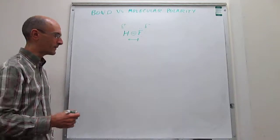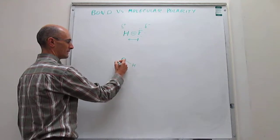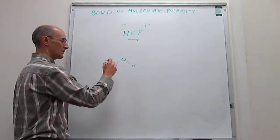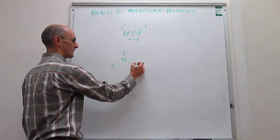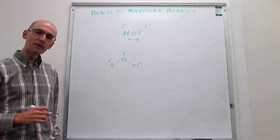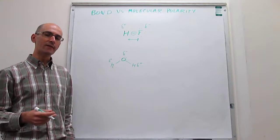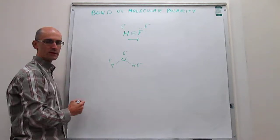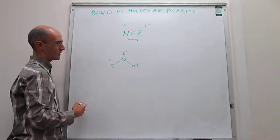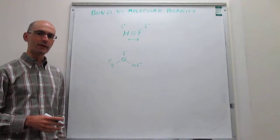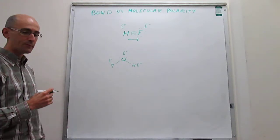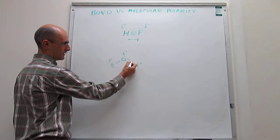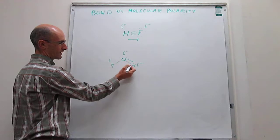We can start very simply with water. If we draw the Lewis dot structure of water, we know that oxygen is more electronegative than hydrogen, so there will be a negative end at the oxygen and positive ends at the hydrogens. Using VSEPR theory, we know that the environment around the oxygen atom is tetrahedral, and because you have two lone pairs, that results in a bent molecule with an angle slightly smaller than the tetrahedral angle of 109.5°. That shape is going to tell you if the molecule will be polar or not.